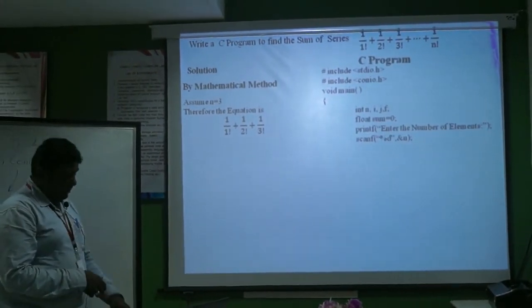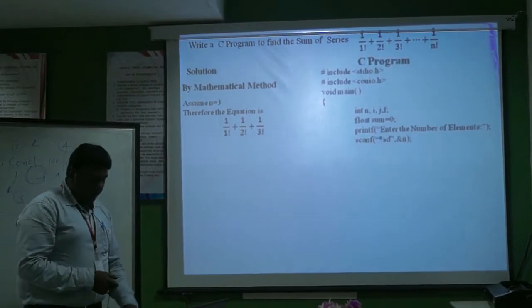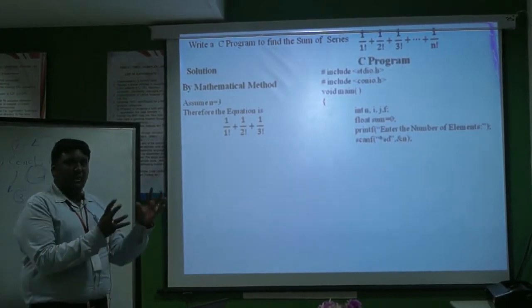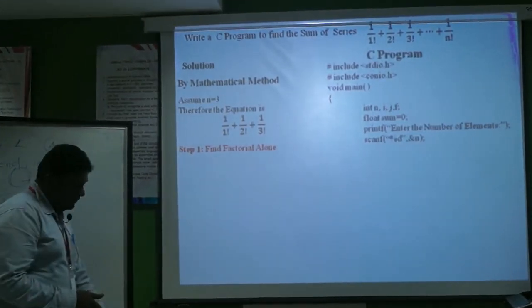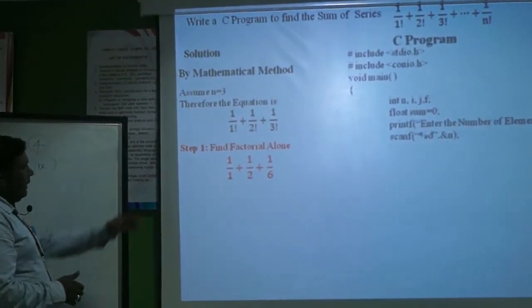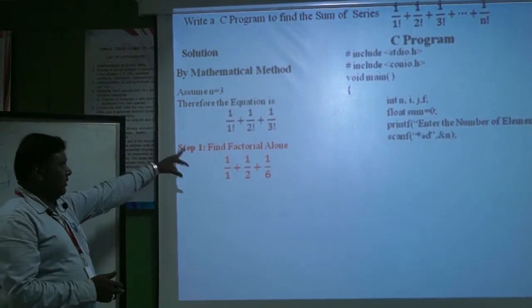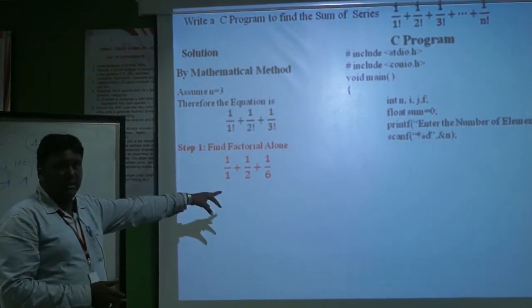Then I am reading the input n. From the mathematical point of view, we will find the first difficult part alone, which is the factorial value. I have calculated 1 factorial first, that is 1, 2 factorial, that is 2, and 3 factorial, that is 6.